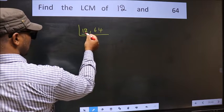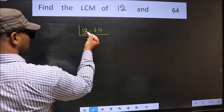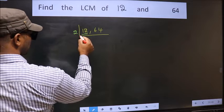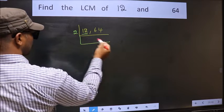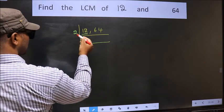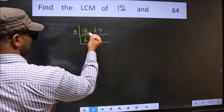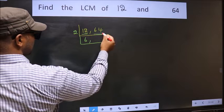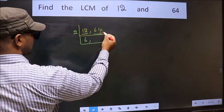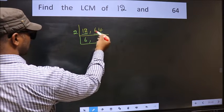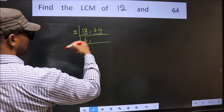For this number, the last digit is 2, so it is divisible by 2. When do we get 12 in the 2 table? 2, 6, 12. Now the other number 64 — last digit 4, so this is also divisible by 2.